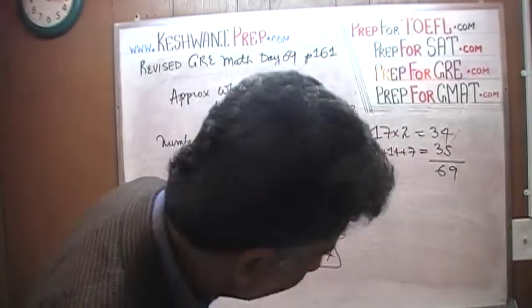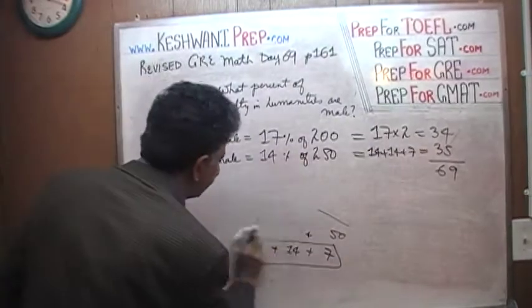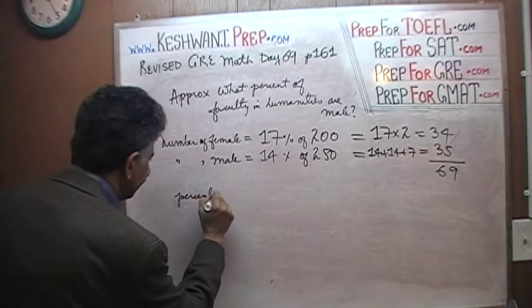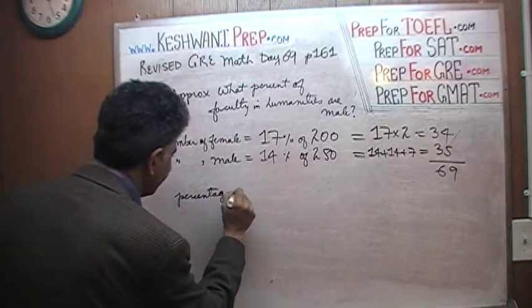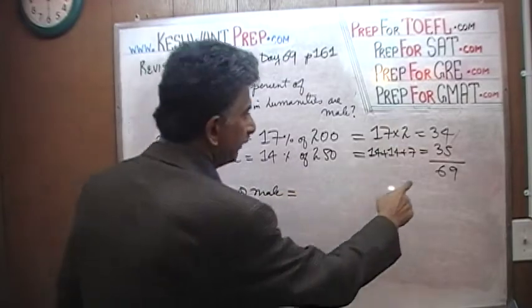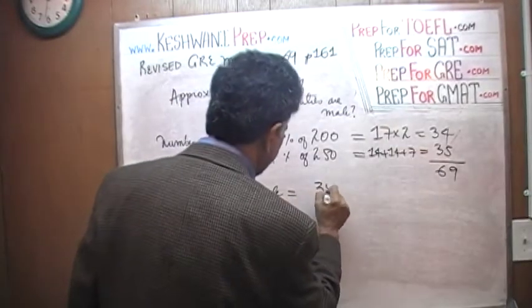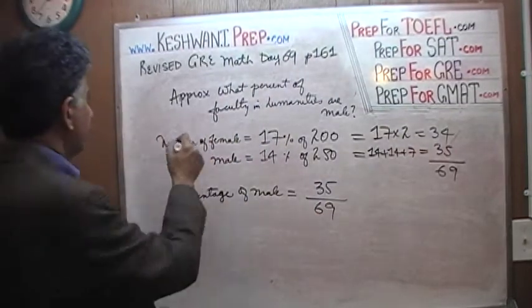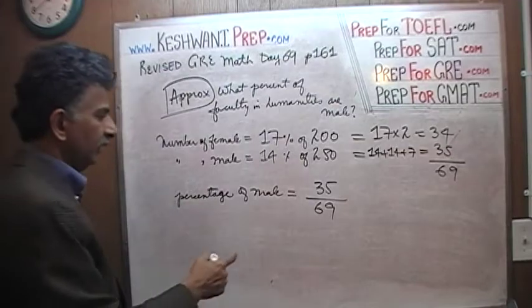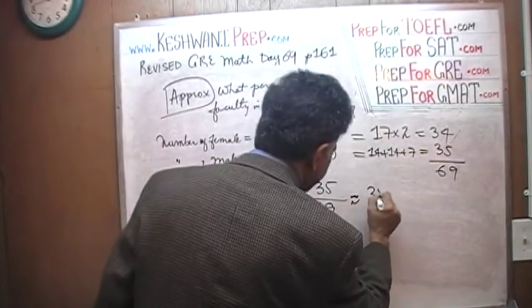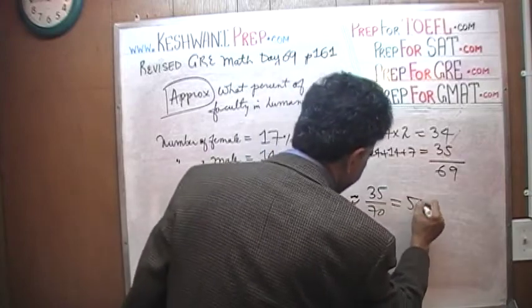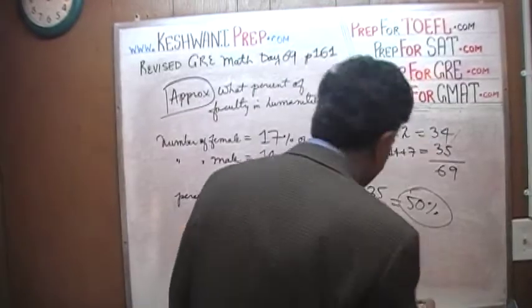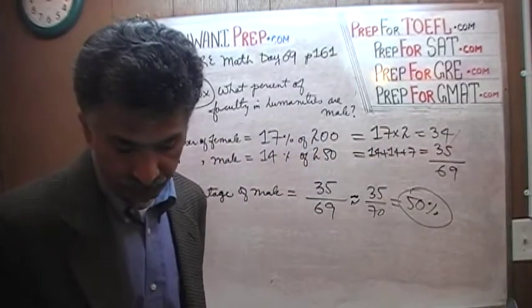Now we figure out the percentage, that's all. The percentage of male equals the number of males, which is 35, over the total number, which is 69. But that's pretty simple because of the fact that they say approximately. Well, this is approximately 35 over 70, and 35 over 70 is exactly 50%. That is the answer, 50% is the answer, the answer is E, because E says 51%.